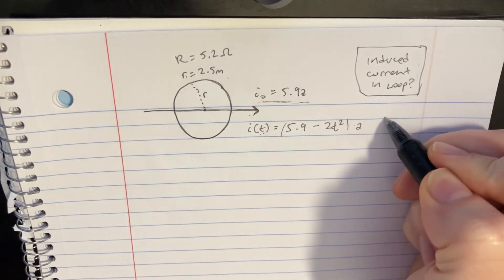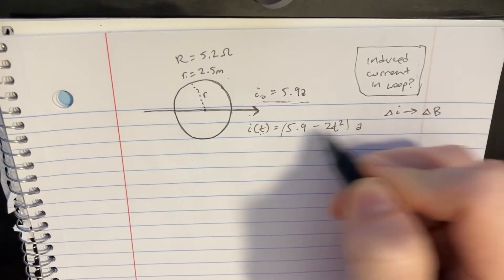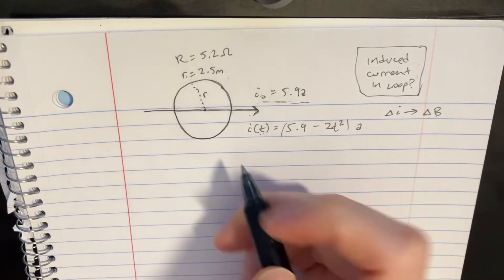And once the current changes, so we have the change of current, that's going to create a change in the magnetic field that is associated with this wire around it, right?